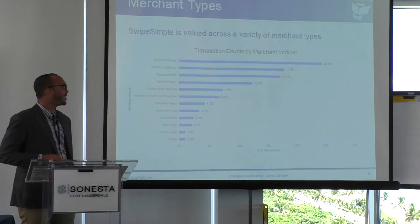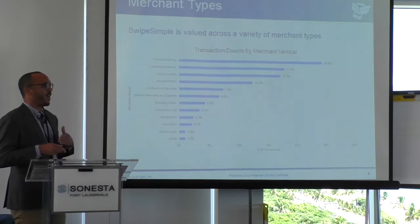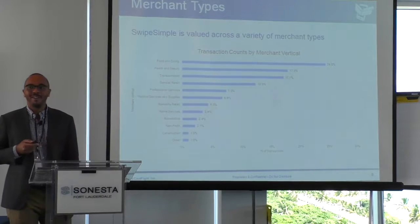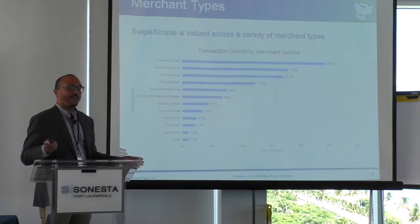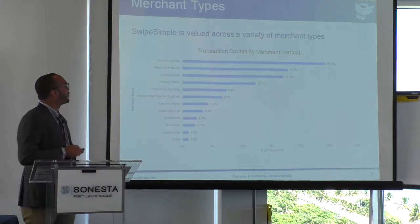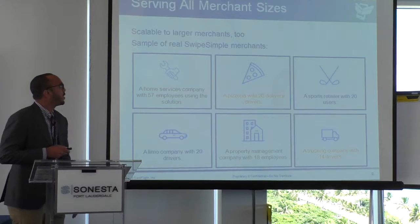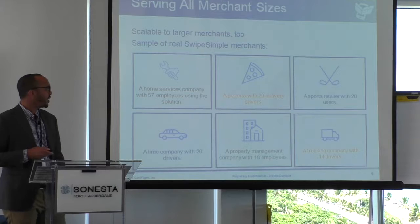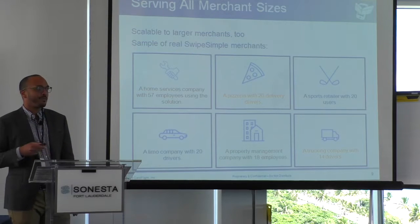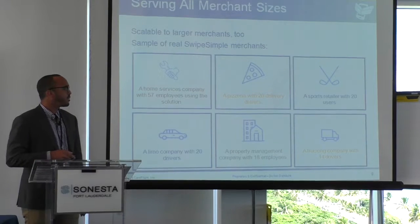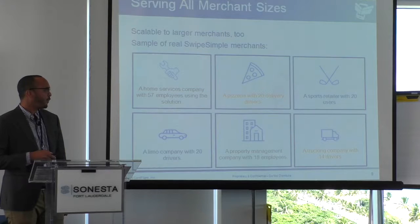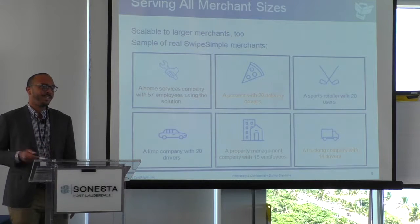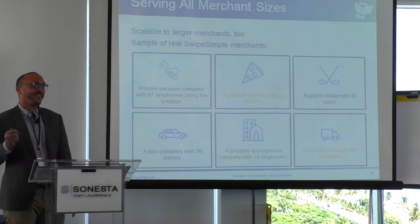That's a great way to think about it — it starts as one small merchant but how can we expand? Professional services, general retail — I'd love a line-buster solution where someone in a 30-minute wait line could just knock out the transaction. Some more enterprise-level examples: a home service company with 57 employees, a pizza delivery company with 20 drivers, a sports retailer with 20 users, a trucking company with 14 drivers, and a property management company with 18 employees.